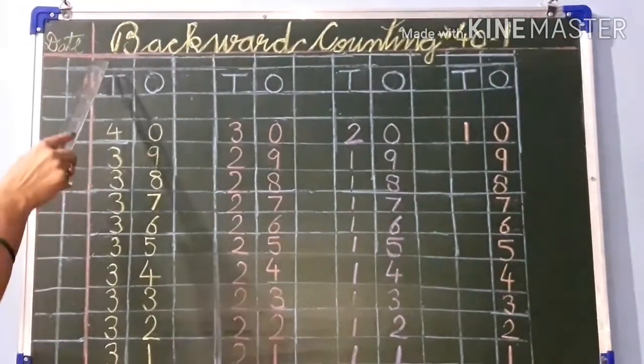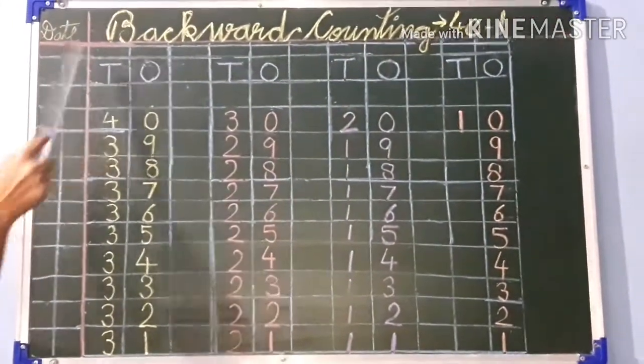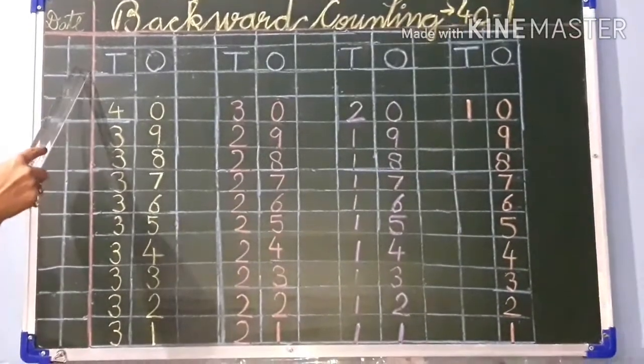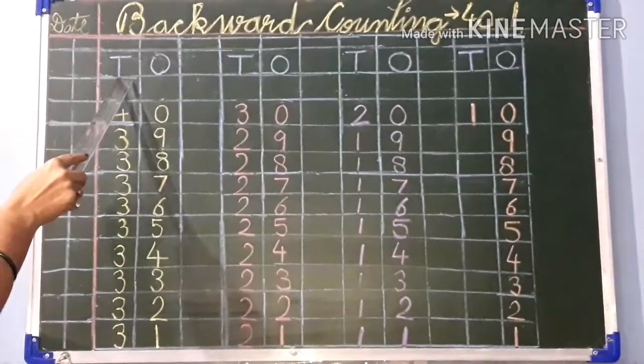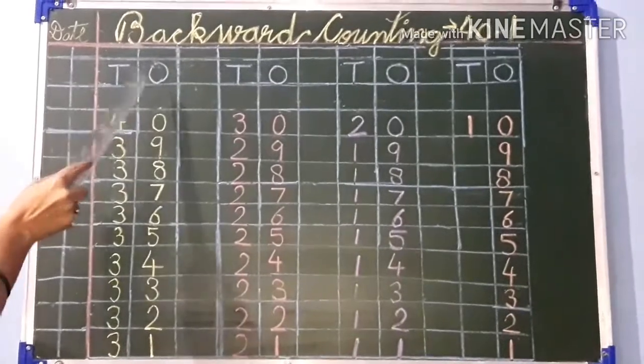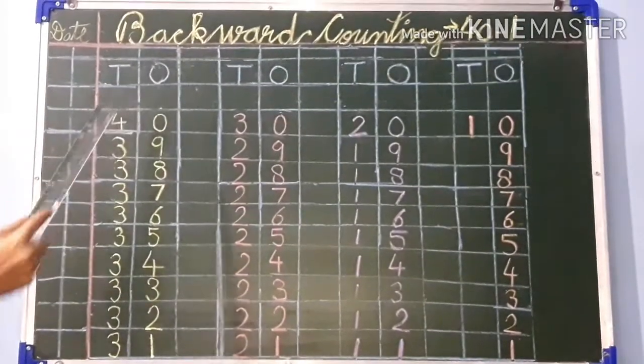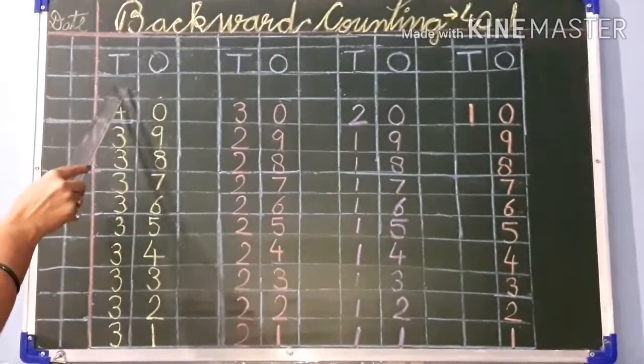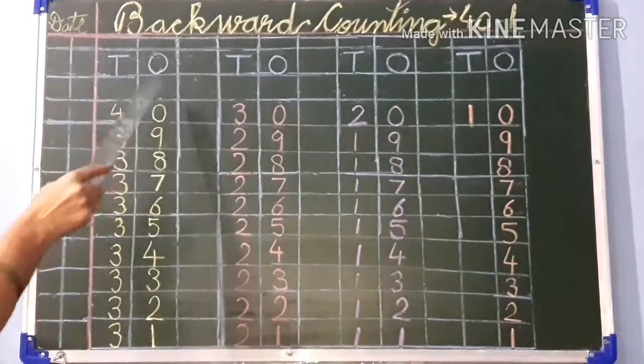Now children, after leaving 1-1 block and beside this margin line you will write T O. T for tens, O for ones. And again you have to leave 1-1 block here.